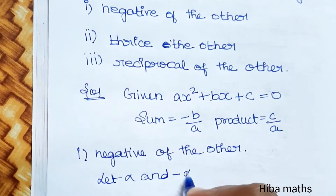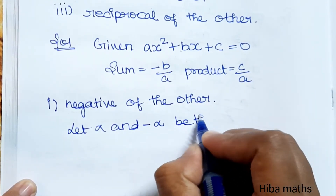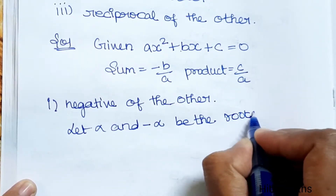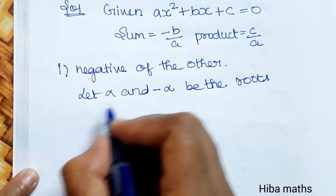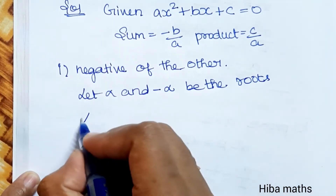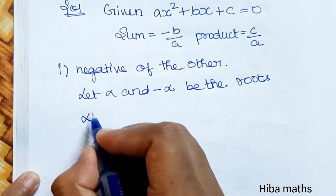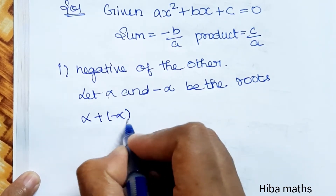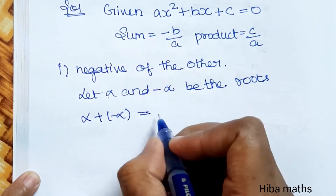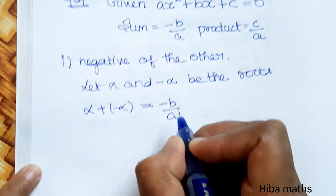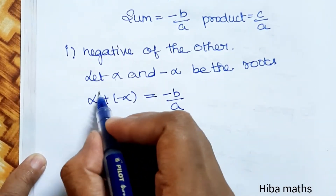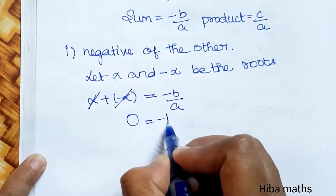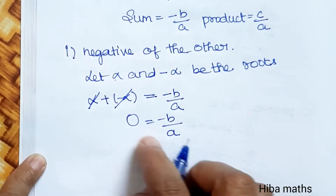Sub-case 1: The roots are negative of each other. Let the roots be α and -α. Sum of roots: α + (-α) = -B/A. The terms cancel, giving 0 = -B/A.